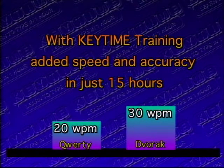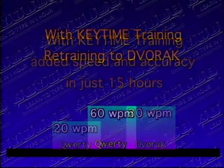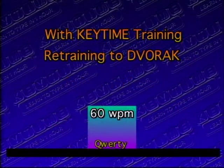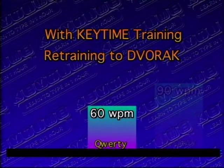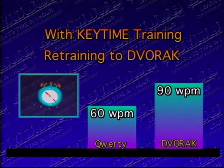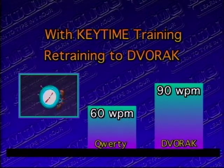So for people typing 60 words per minute on the standard keyboard, they can now increase quickly to 90 words per minute on the Dvorak keyboard.